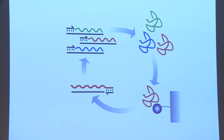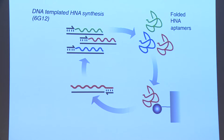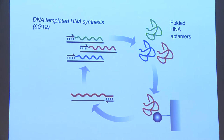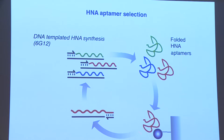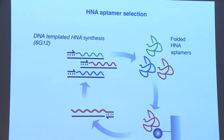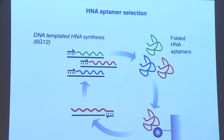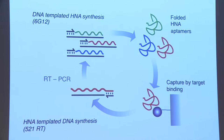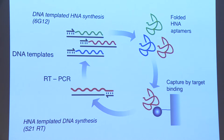This is our HNA aptamer selection protocol — completely standard. We start with a DNA random sequence library, synthesize HNA, and get rid of the DNA with DNase I. We bind the library to a solid-phase target, wash away the non-binders, elute the binders, reverse transcribe, PCR, and start again.